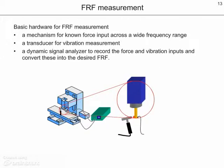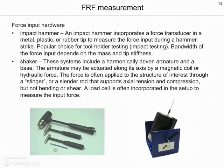Let's discuss the equipment necessary to perform a frequency response function measurement. First, we need a mechanism to input a known force across a wide frequency range. Second, we need a transducer to measure the vibration. And third, we require a dynamic signal analyzer that records the force and vibration inputs and converts these into the desired frequency response function. There are two main mechanisms for force input: the first is the impact or modal hammer, where a force transducer in a metal, plastic, or rubber tip is used to measure the force input during a light hammer strike. This is the most popular choice for tool holder testing.